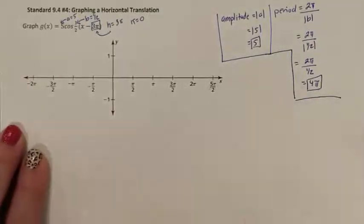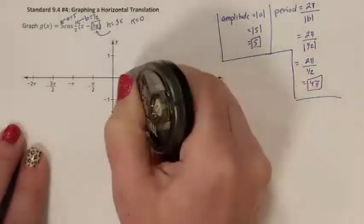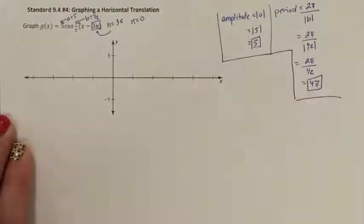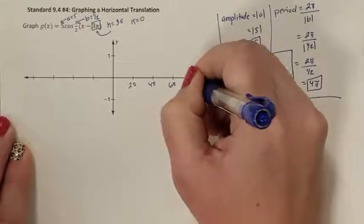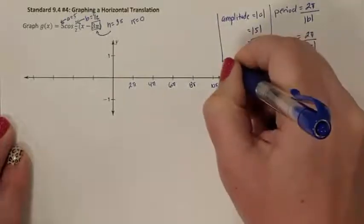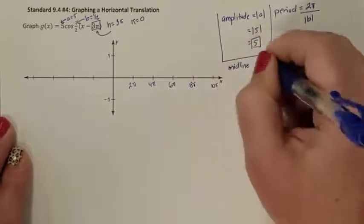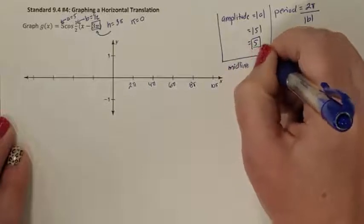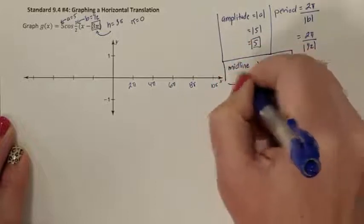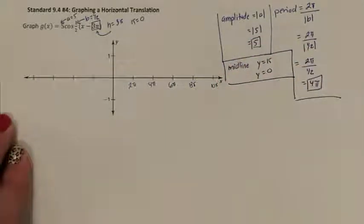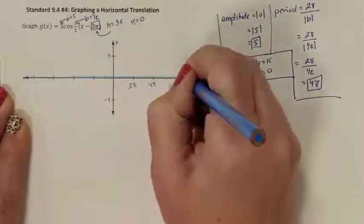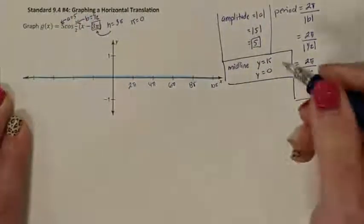This means that my x-axis needs to be able to count up to 4 pi before it starts repeating again. We need to rescale our x-axis. Our midline is y equals k. My k is zero, so my midline actually didn't move — it stayed exactly at zero, on the x-axis.